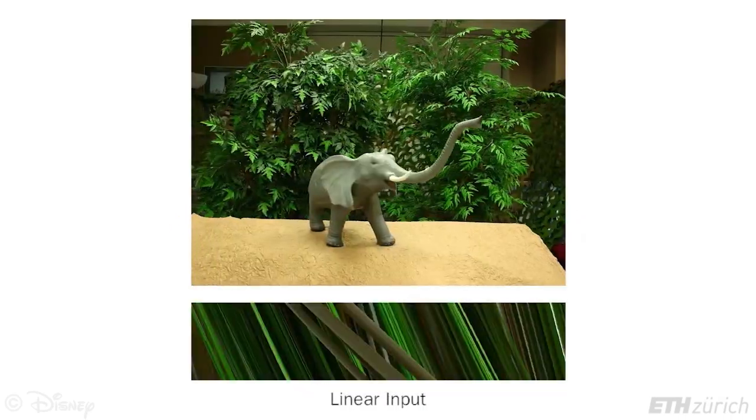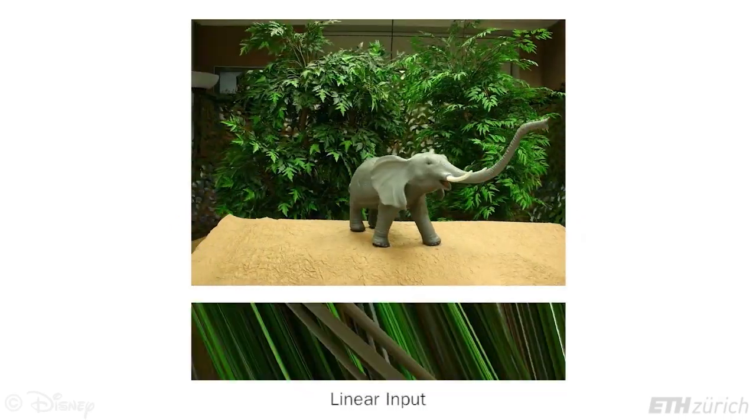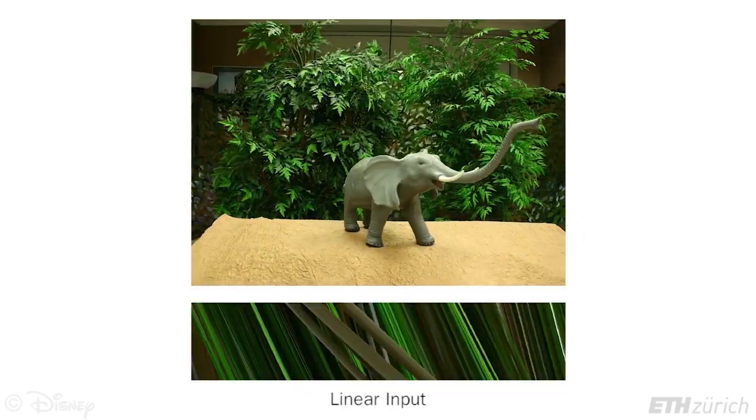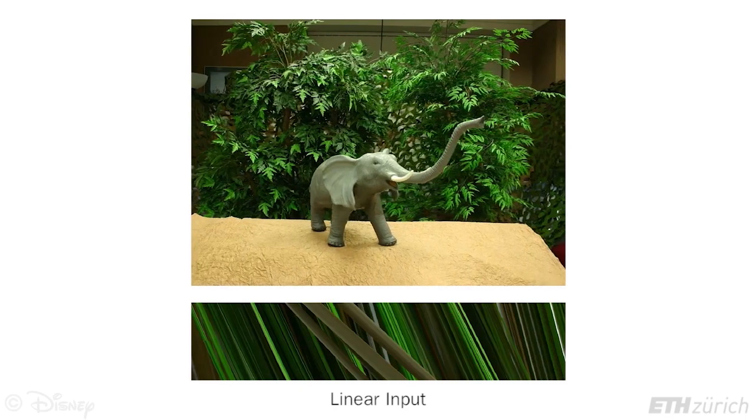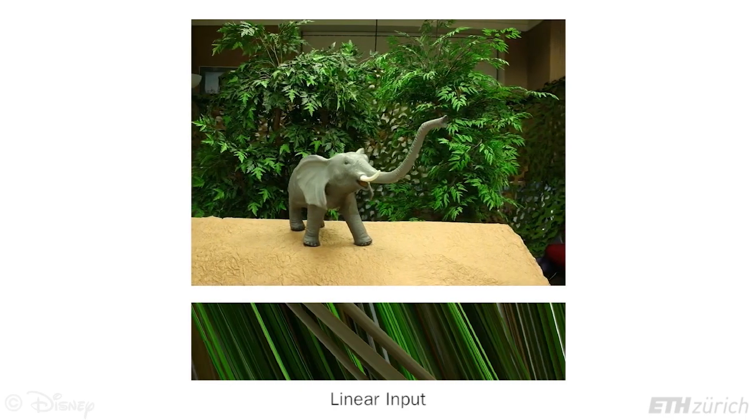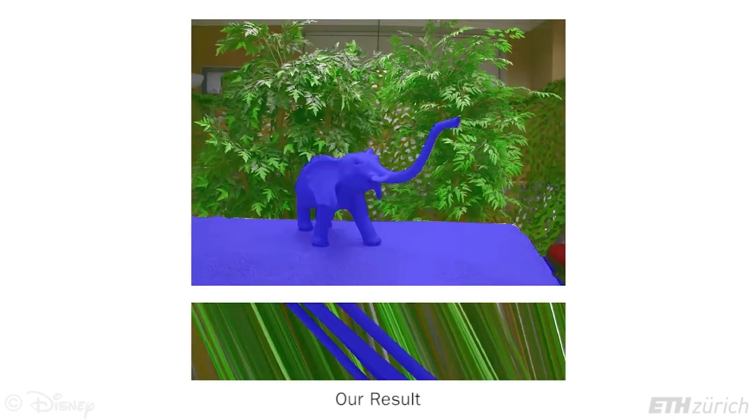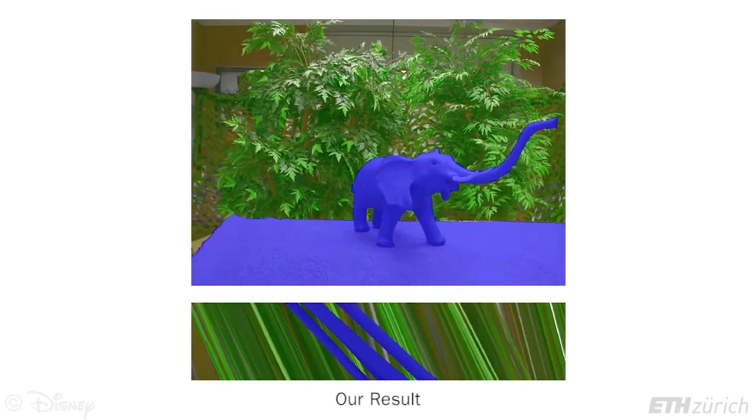In this linear light field we do not have enough views to fully segment the object in 3D, but we can still create a 2D segmentation of the input views.